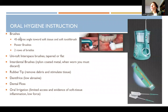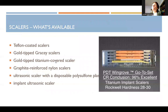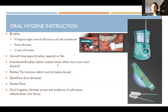Oral hygiene instruction is not very different from standard instruction. Brush at a 45-degree angle with a soft toothbrush — a power toothbrush is wonderful. Use a special toothbrush with two rows of bristles, a uni-tuft/interspace brush, or tapered or flat interdental brushes. If using an interdental brush with a wire, make sure it's nylon-coated; or if it's metal, don't push the wire against the implant, and discard it once worn. The rubber-tip stimulator can gently stimulate gum tissue. Low-abrasive toothpaste, dental floss, and oral irrigation are all wonderful options.